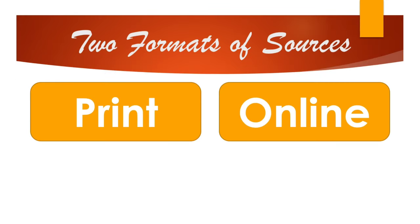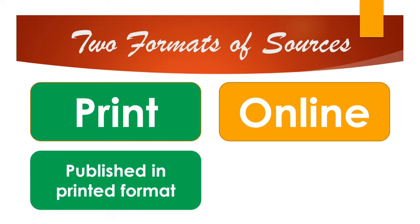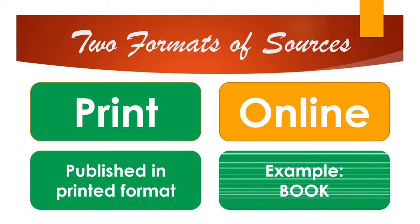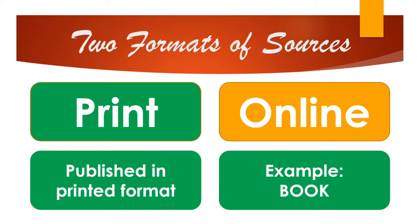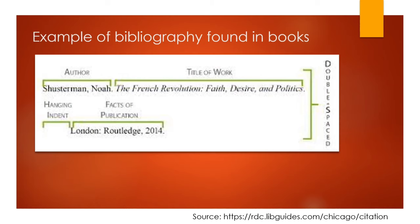Did you know that there are two main types of sources? There's print and online sources. For this specific lesson we are going to focus on print. Print sources are published in printed format. There are various examples of print sources: books, newspapers, periodicals, journals, magazines, and many more. For this specific lesson we are going to focus on books.